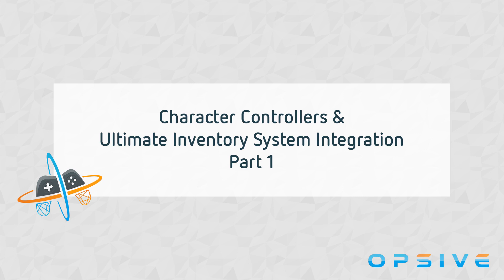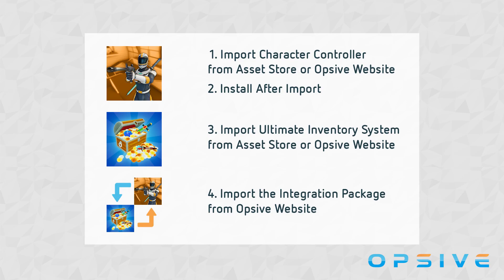You can download the integration by going to the documentation page and finding your download link. Make sure you choose the character controller that you own. Once you have all three packages, you can install them in Unity. First, we'll start by installing the Character Controller, then the Inventory System, and then the integration between the two.